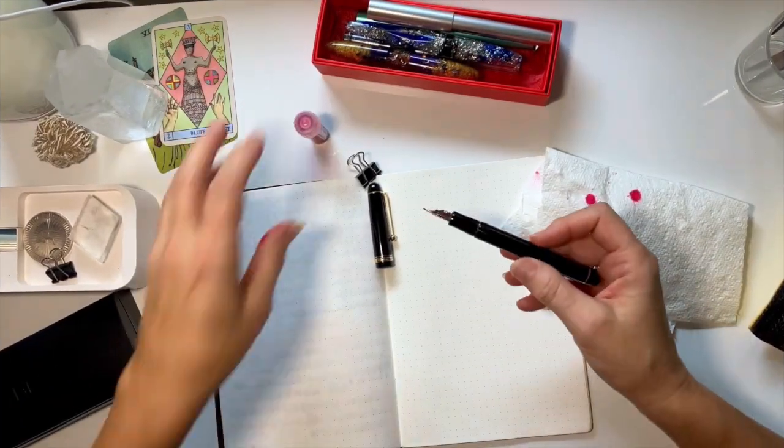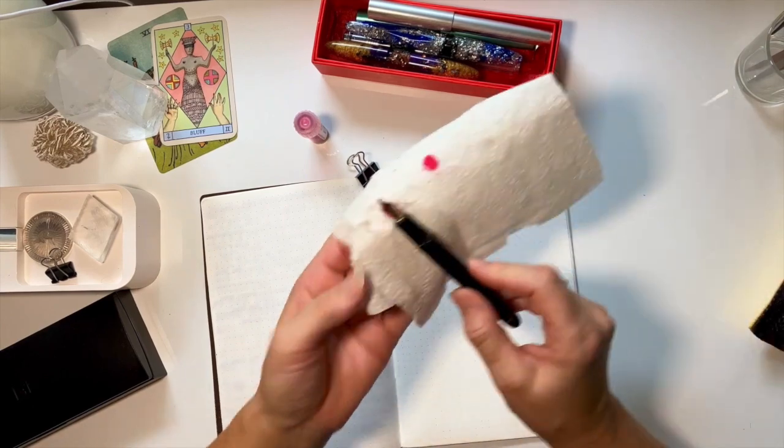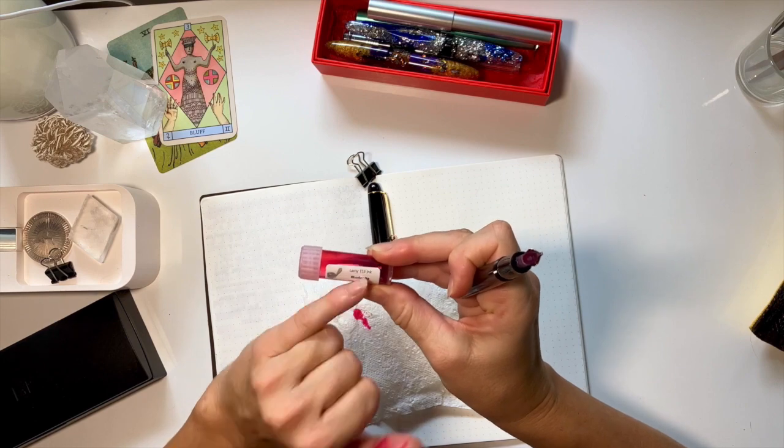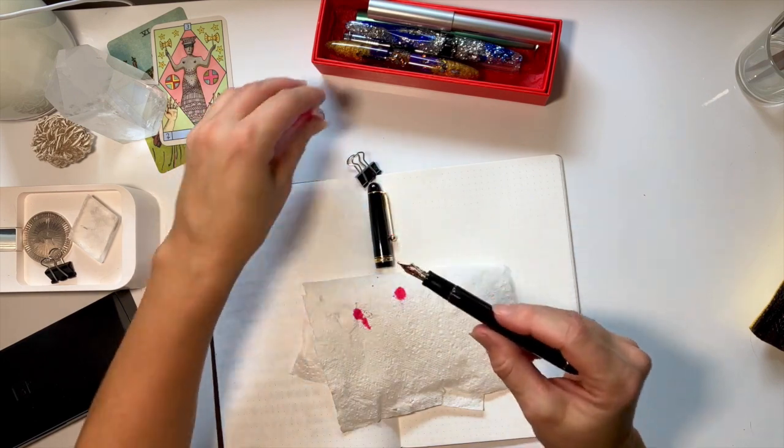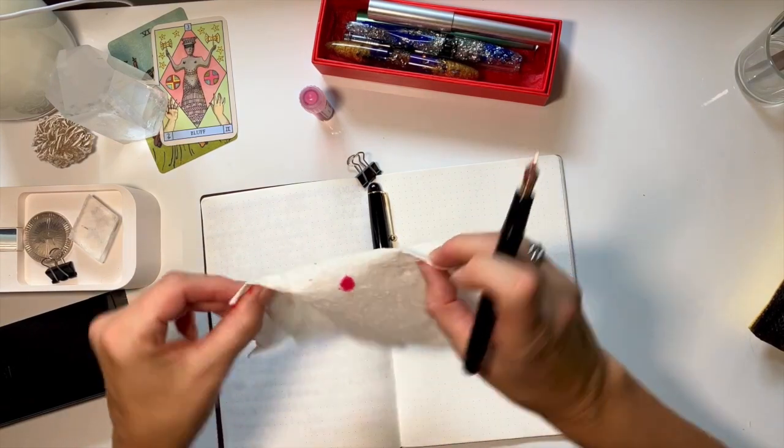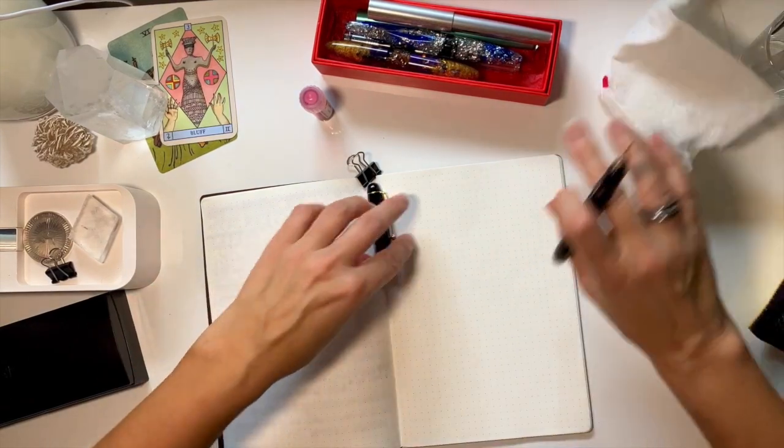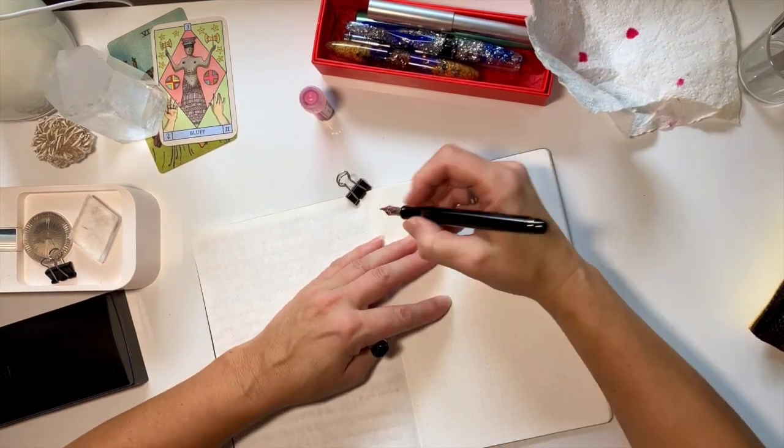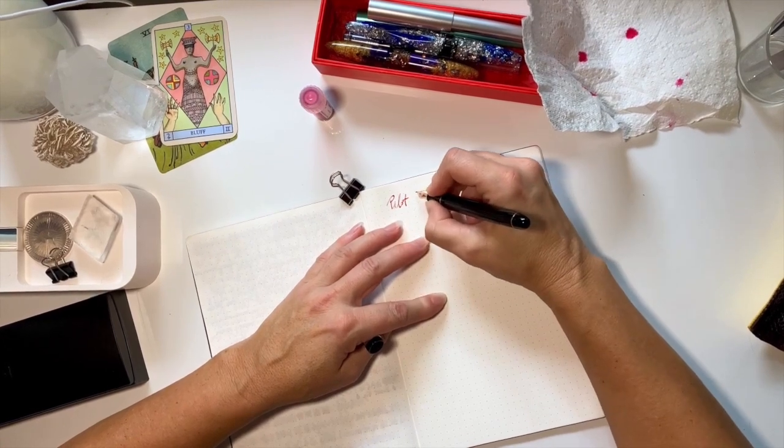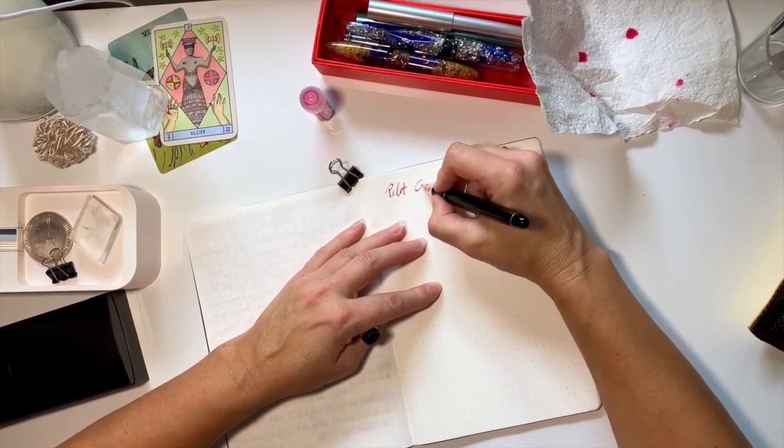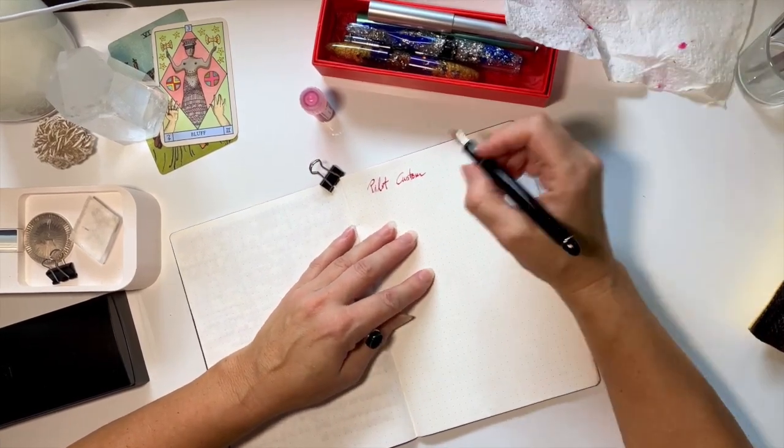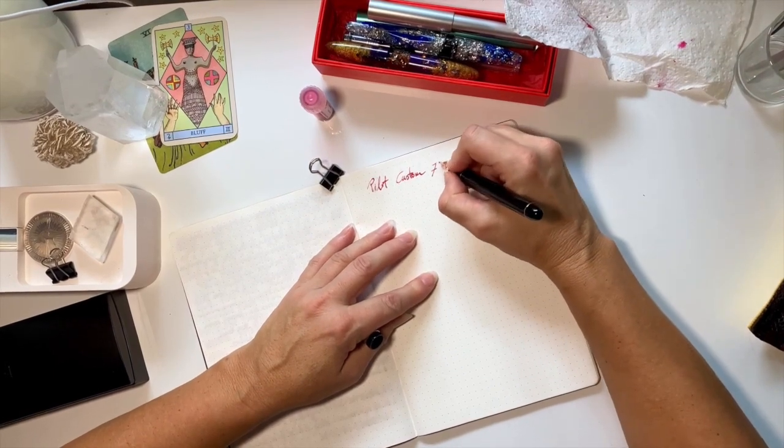All right, so I've just inked her up with some Rhodonite from my Lamy Crystal series. The thing is that with this Con-70, I don't know if it's working properly or not. It wasn't sucking up enough ink, so I don't know what went wrong there. But anyway, we'll try it. Oh wow!